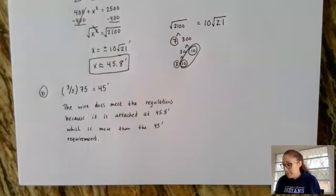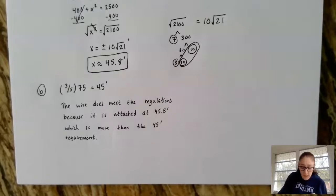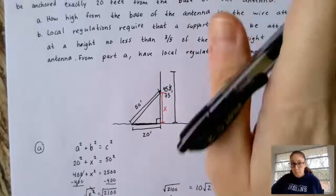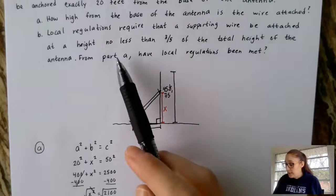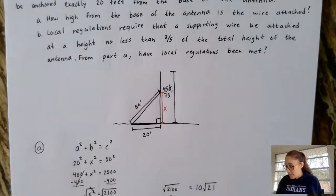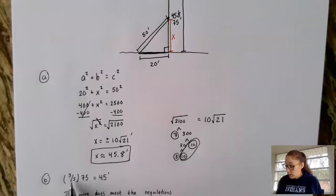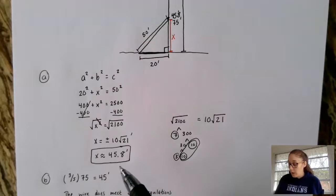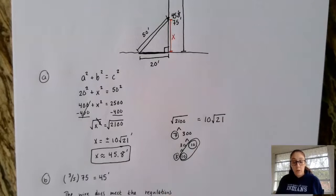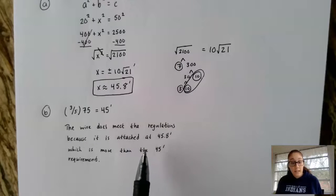Sorry about the weird cut off at the last part of the video. Let's take a look at Part B. Local regulations require that a supporting wire be attached at a height no less than three-fifths of the total height of the antenna. From Part A, have local regulations been met? To figure out Part B, what we have to do is figure out what three-fifths of the total height is. So here, if we do 3/5 times 75, we get 45 feet. So the problem says that the height of the wire cannot be less than three-fifths, so less than 45 feet. Well, our wire is attached at 45.8 feet, so it just meets the requirement. So what we're going to say is our final answer is that the wire does meet the regulations because it is attached at 45.8 feet, which is more than the 45-foot requirement.